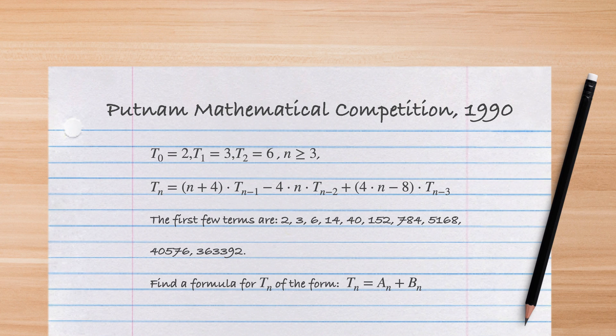Now that we are more comfortable with these two fundamentals, let's see how to use them to solve a problem that was posed as part of the Putnam Mathematical Competition in 1990. Let t₀ equal 2, t₁ equal 3, t₂ equal 6, and for n greater than or equal to 3, let tₙ be a formula of the type shown in the picture. The first few terms are 2, 3, 6, 14, 40, and so on. The question is: can you find a formula for tₙ of the form tₙ = aₙ + bₙ, where aₙ and bₙ are well-known sequences?